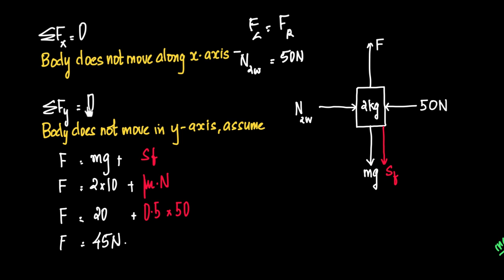Now when we say sigma fy is equal to zero, we need to understand that the body does not move in the y-axis. Why? Because we assume that this relative motion is not happening. There's no relative motion between the block and the wall. However there's some tendency which will be opposed by friction. So forces acting upwards should be equal to forces acting downwards. What are the forces acting upwards? The only force acting upward is F, the external force. Downward forces are Mg and static friction.